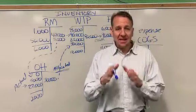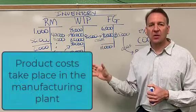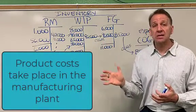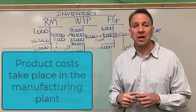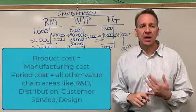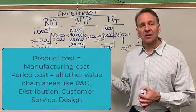Now, remember, this is taking place in the manufacturing plant. These are the product costs and product costs are incurred in the manufacturing plant. All the other value chain areas are period costs. These are the product costs.